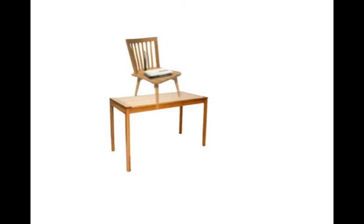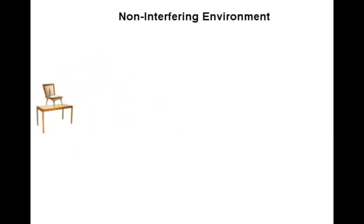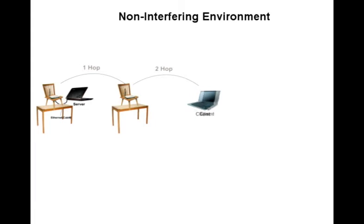In our testbed setup, we placed the routers on top of tables and chairs so that we could have an unobstructed line of sight among them. The antenna height was kept at 1.45 meters relative to ground. We connected the server with the router and then placed the client at 1 hop, 2 hop, and 3 hop distances and calculated the throughput.